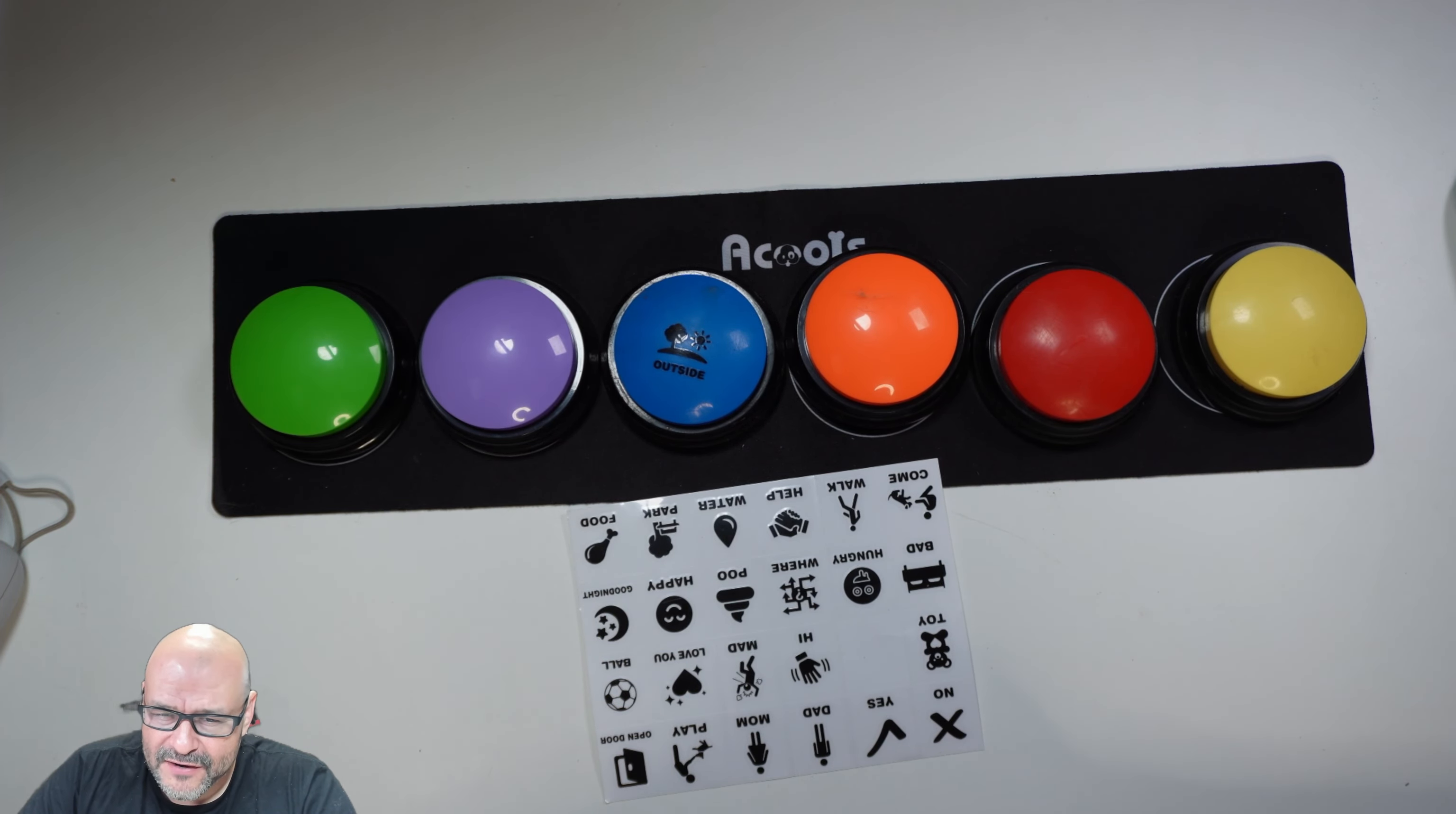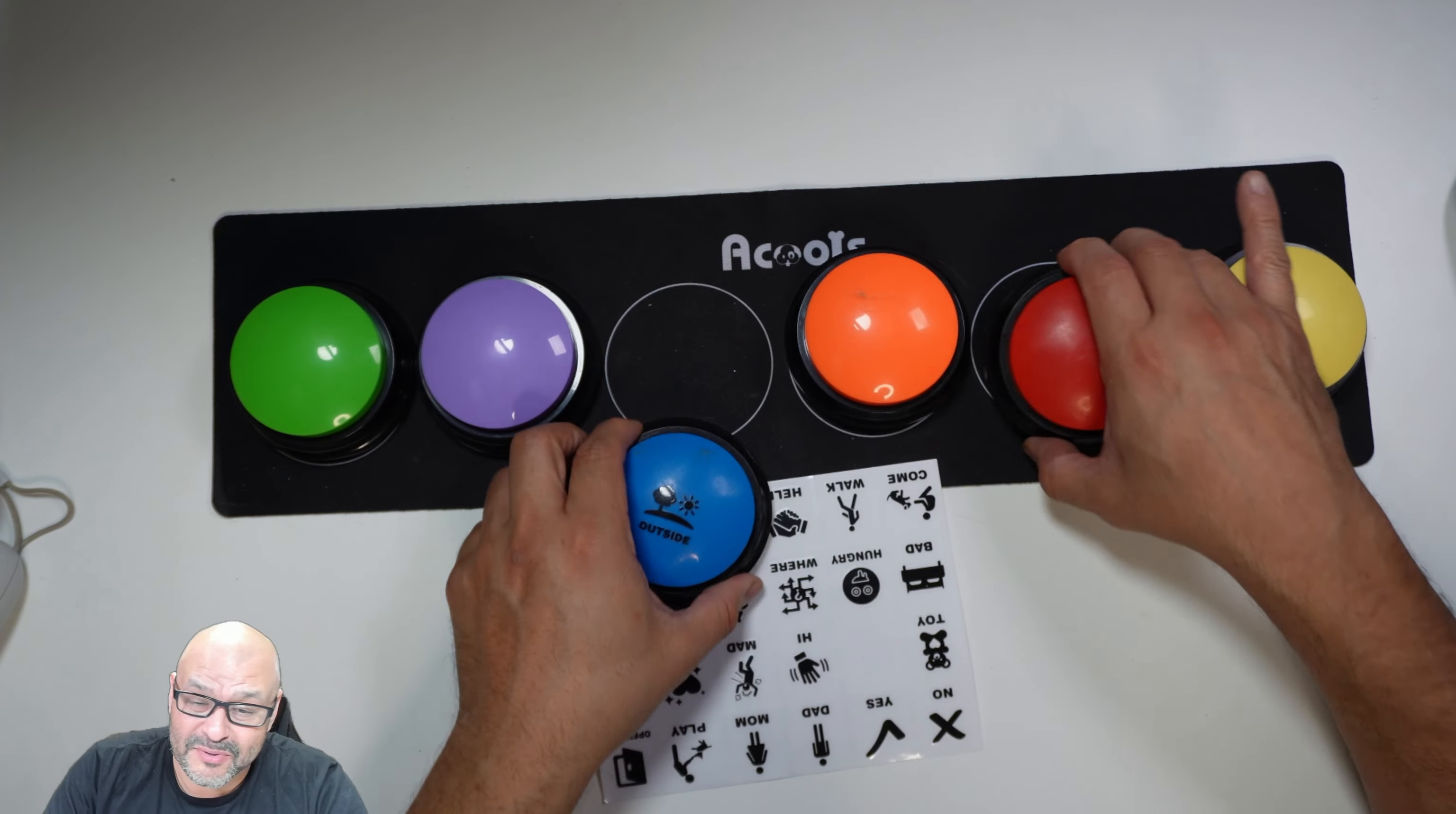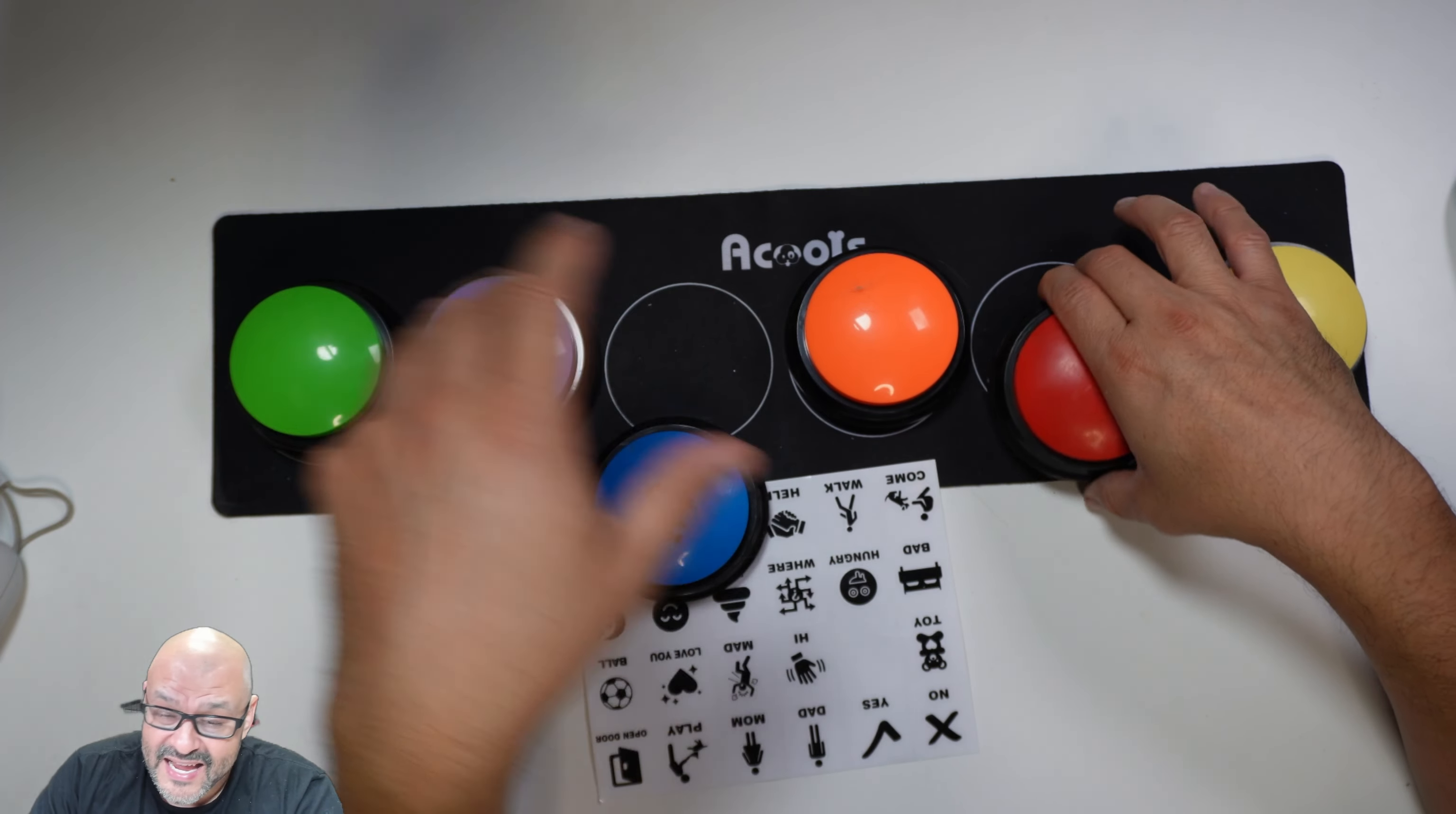Actually, it took me probably maybe half an hour to an hour to train one of our dogs to actually start pushing the button. Not only was he pushing the button to go outside, but he's also asking for a cookie. He was asking for cookies because we did train him to see cookie and go outside and other features.